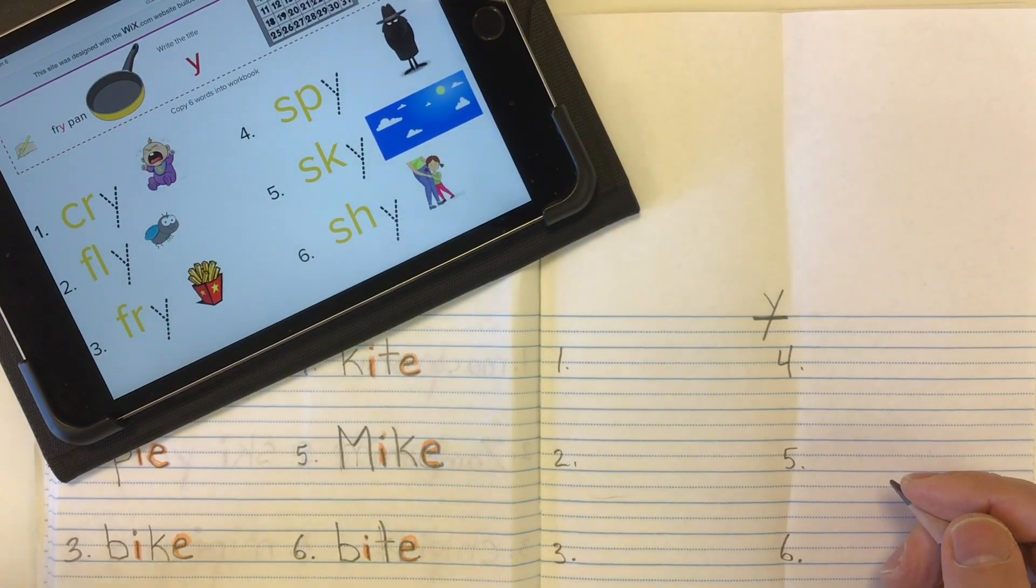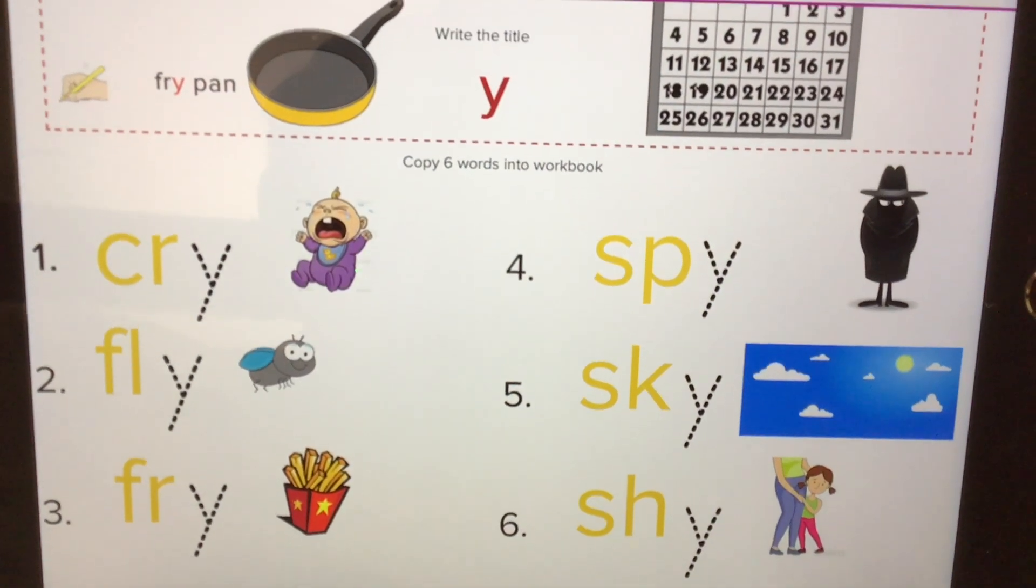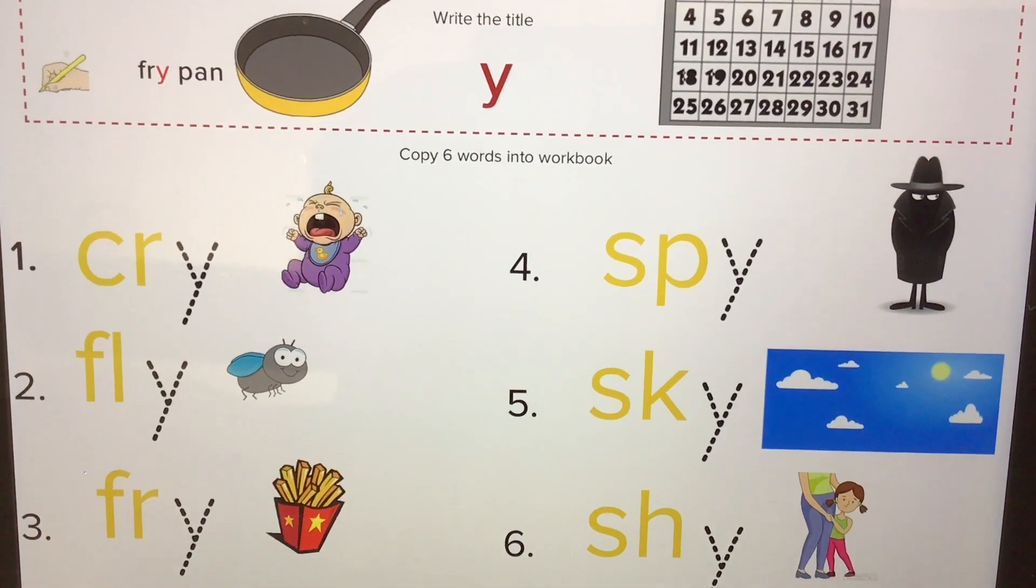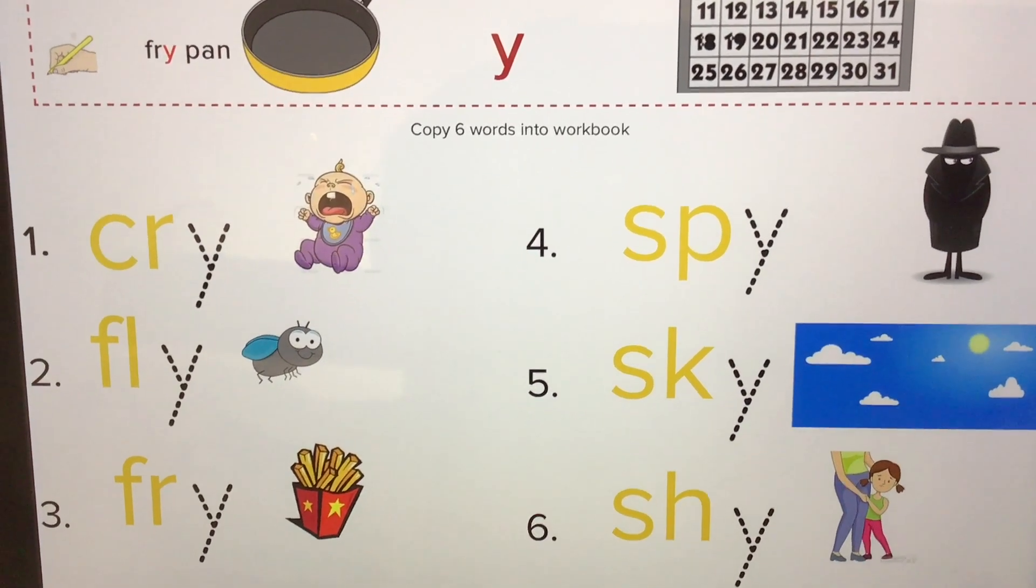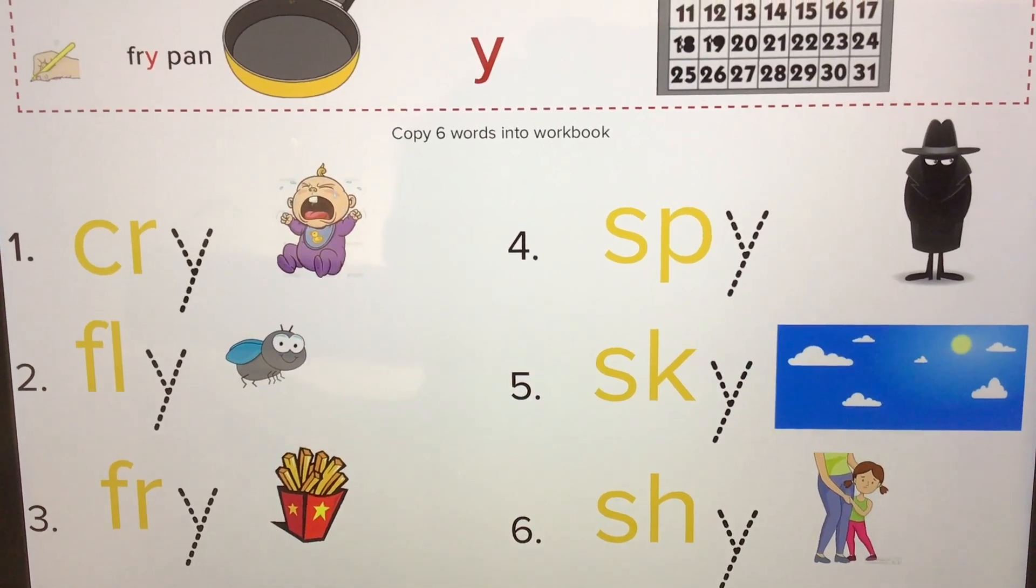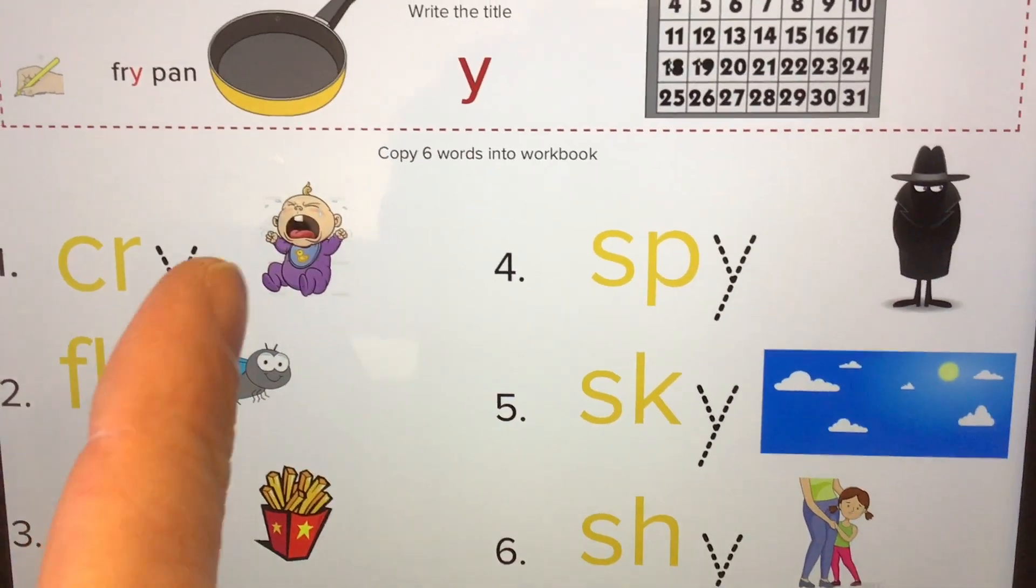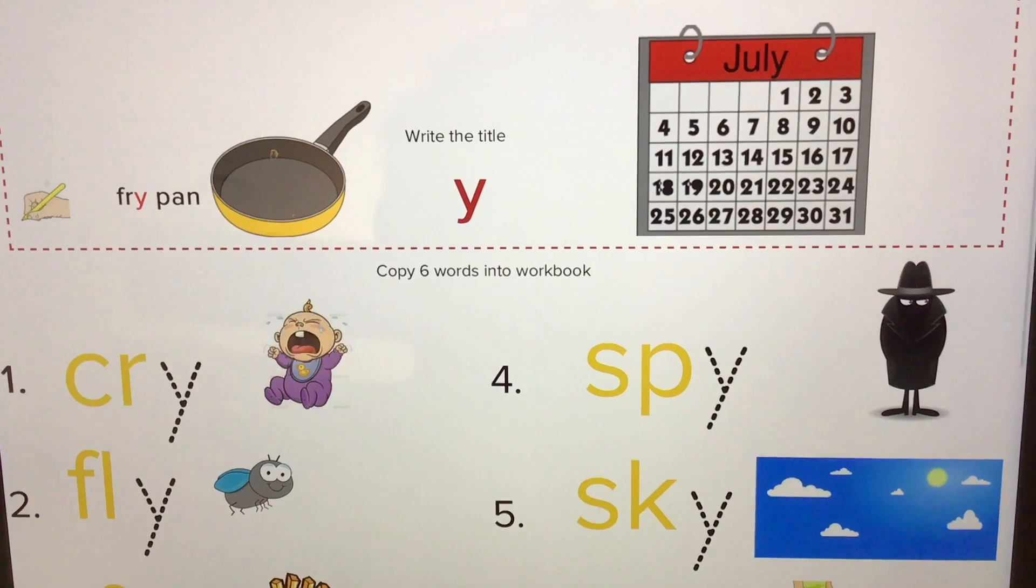Let's take a look at some words that end in letter Y that make the I sound. So we have words like cry, fly, a French fry, a spy, the sky, to feel shy. It'd be a fry pan, or even the month July. All right, well let's go ahead and put our words in.